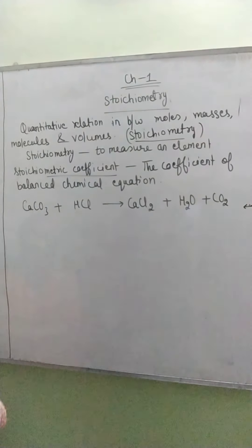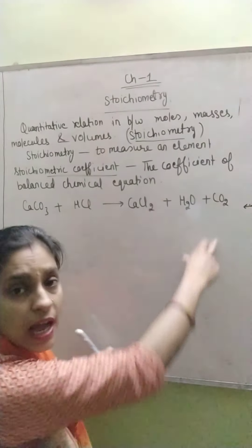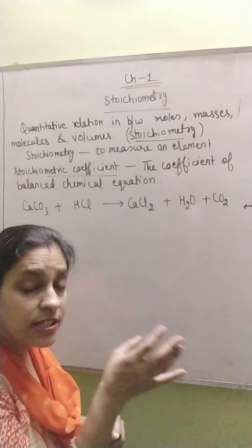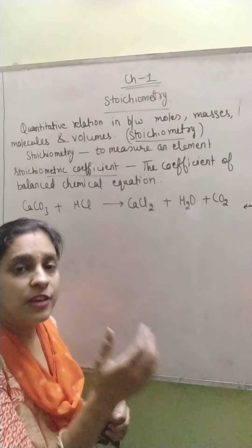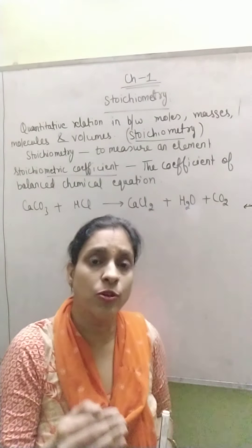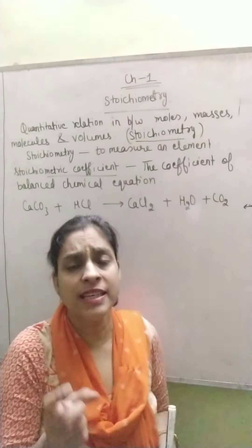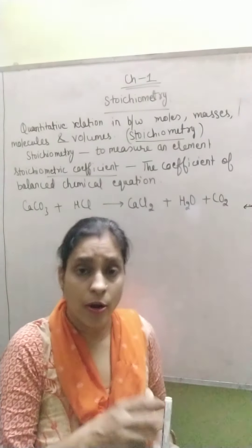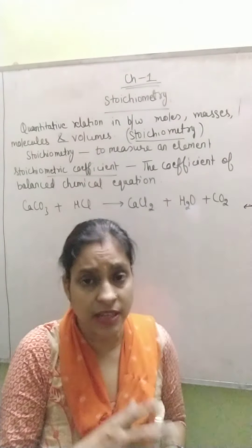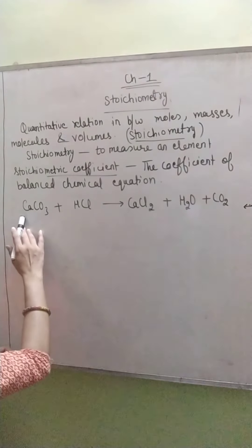For example, if we take the chemical reaction where calcium carbonate reacts with hydrochloric acid, it gives calcium chloride plus water plus carbon dioxide. The first step is to see whether the equation is balanced or not, and if it isn't balanced, then with the help of the hit and trial method we are supposed to balance the reaction. Later on we will also give you other methods of balancing chemical reactions, such as with the help of the redox reaction using the ion-electron method or oxidation method, but there is a separate chapter for that.